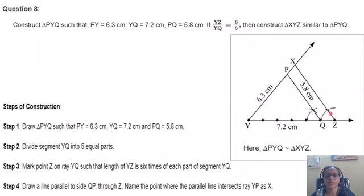Draw a line parallel to side QP through Z. Name the point where the parallel line intersects your YP ray at point X.